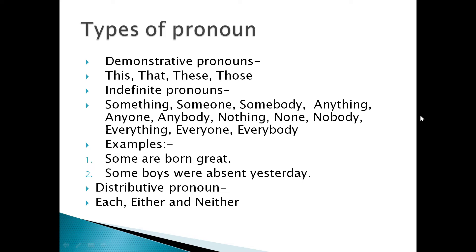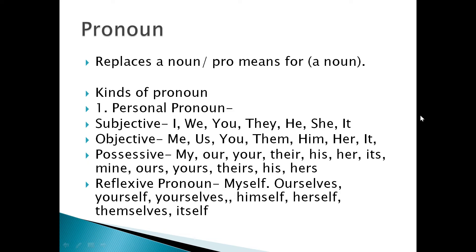The subjective pronouns are I, we, you, they, he, she, it — which we use as subjects of a sentence. The objective pronouns are me, us, you, them, him, her, and it — used in place of the object in a sentence. When we talk about possessive pronouns, examples are my, our, your, their, his, her, its, mine, ours, yours, their, his, and hers.